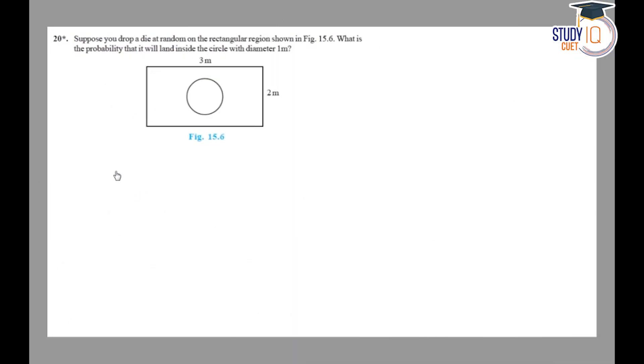Class 10th NCERT Chapter 15 Exercise 15.1 Question Number 20. Suppose you drop a die at random on the rectangular region shown in Figure 15.6. What is the probability that it will land inside the circle with diameter 1 meter? So we have a die dropped at random on this rectangular region. What is the probability that the die lands in the circle?